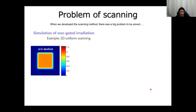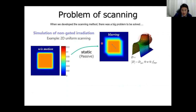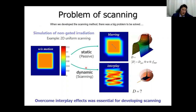However, when we developed the scanning irradiation method, there was a big problem to be solved. When a treatment field is applied to a moving tumor, in the passive irradiation method the dose distribution is just blurred at the target edge, and within the target a very homogeneous dose can be delivered. On the other hand, in the scanning irradiation method, the dose distribution will be strongly distorted due to the interplay effect between tumor motion and beam scanning. So at least 12 years ago, when we developed the scanning method, overcoming this interplay effect was essential.